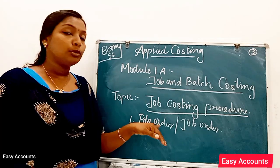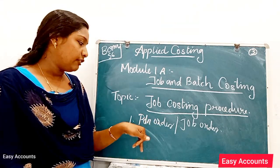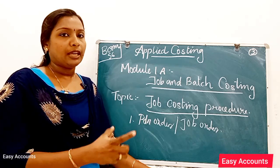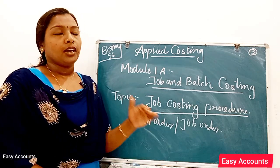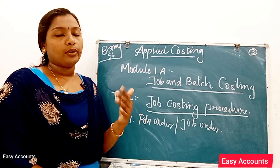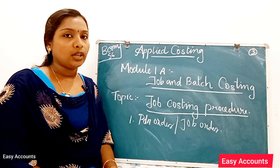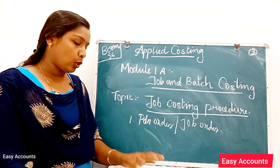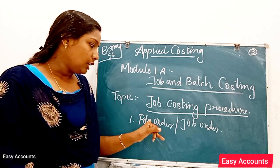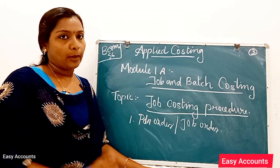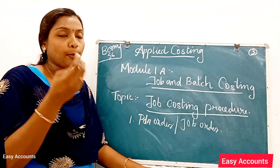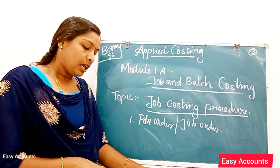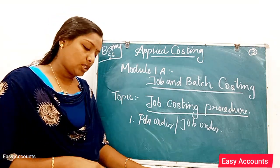There are 7 procedures. The first is called Production Order or Job Order. As and when we have an order for a customer, we will proceed with the first step — the Production Order.